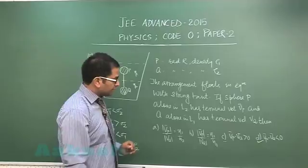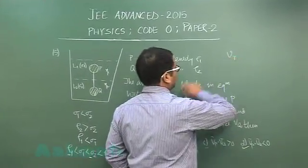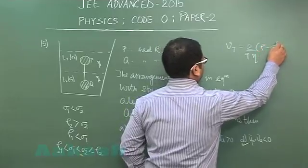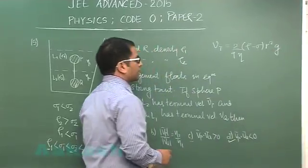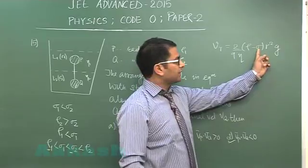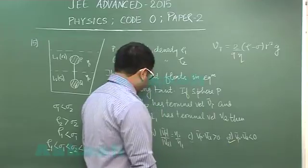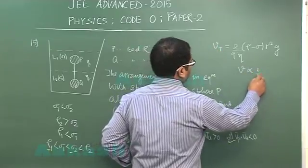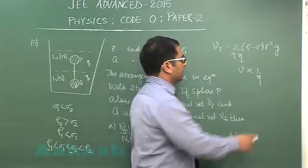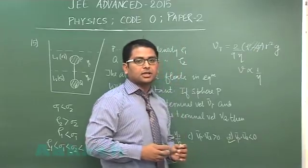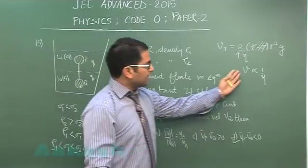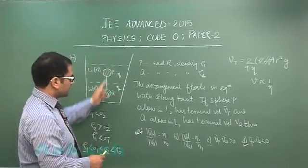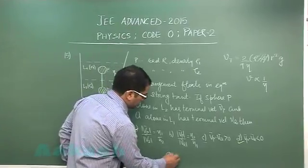For the magnitude of terminal velocity, the formula is V = (2/9η) · (ρ − σ) · R² · g, where ρ is the solid density, σ the liquid density, R the radius, and g the gravitational acceleration. Since we consider each sphere in one liquid separately, V is inversely proportional to η. Because P moves in liquid L₂ and Q moves in liquid L₁, the ratio involves η₂ and η₁. This gives option E as correct, along with option D. So question number 15 has correct options D and E.